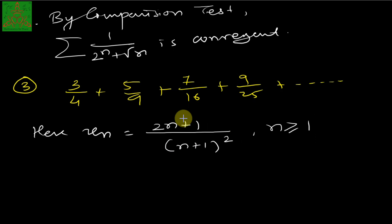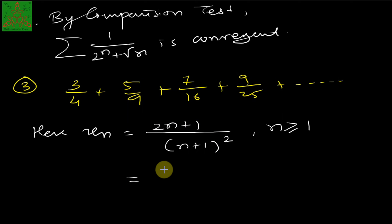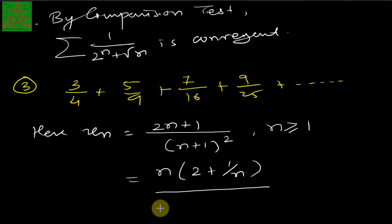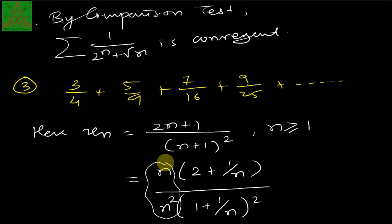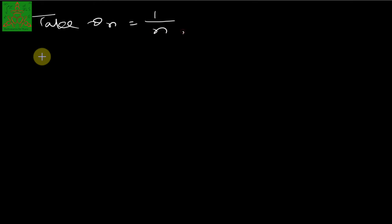As in Example 1, since this is polynomial over polynomial, we factor out the maximum power. In the numerator we factor out n to get 2 + 1/n; in the denominator we factor out n² to get (1 + 1/n)². After cancellation the dominant comparison term is v_n = 1/n.